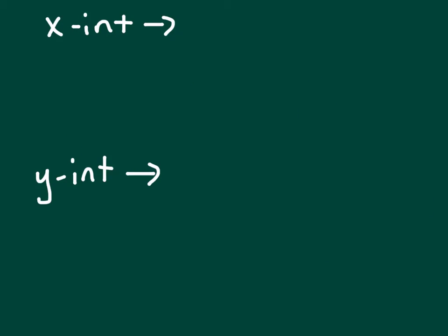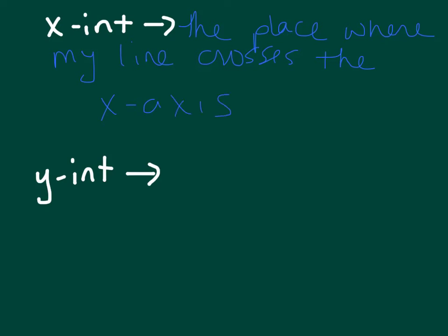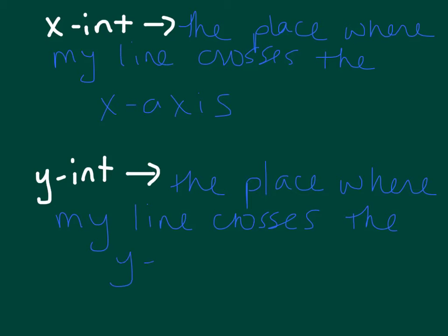I also want to talk about the x and the y-intercept. The x-intercept is the place where my line crosses the x-axis. And my y-intercept is the place where my line crosses the y-axis.